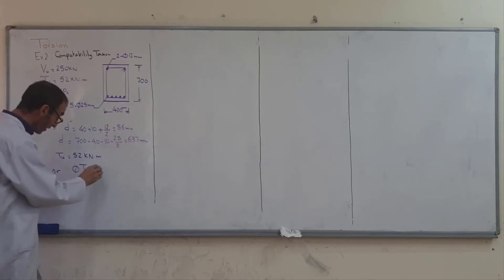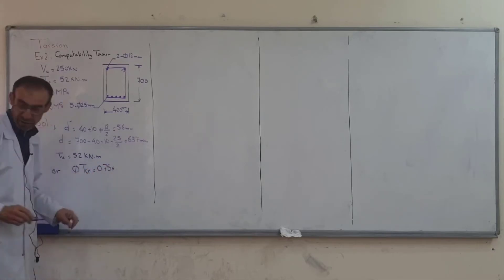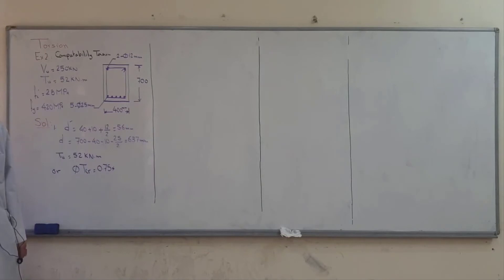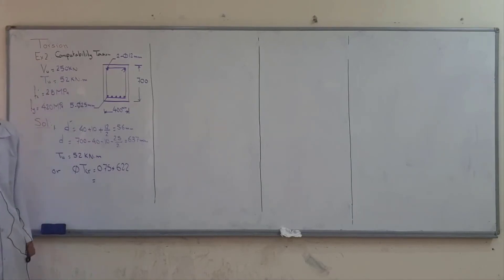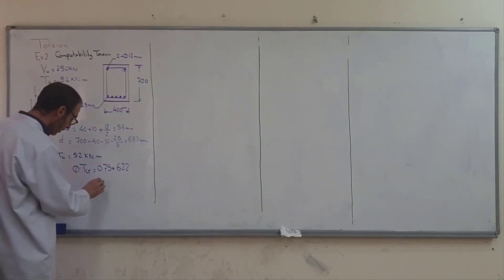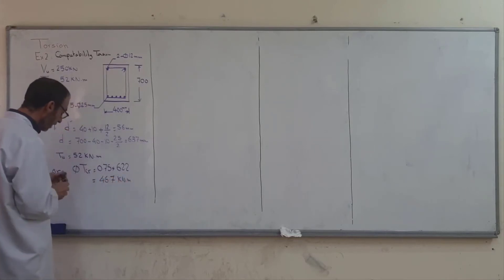We found phi t crack in the previous example. T crack at this stage is equal to 62.2 kNm. The result equals 46.7 kNm.